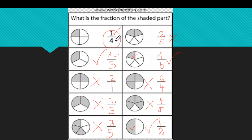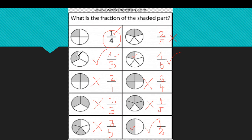Please remember: a unit fraction is a fraction where only one part of the whole is shaded. When you have number one on the top, that will be a unit fraction. Unit fraction has only one part of a whole shape shaded.